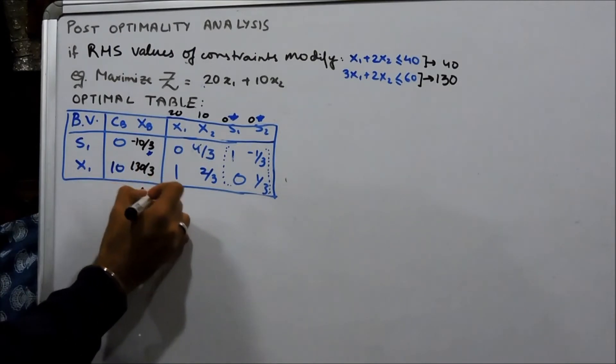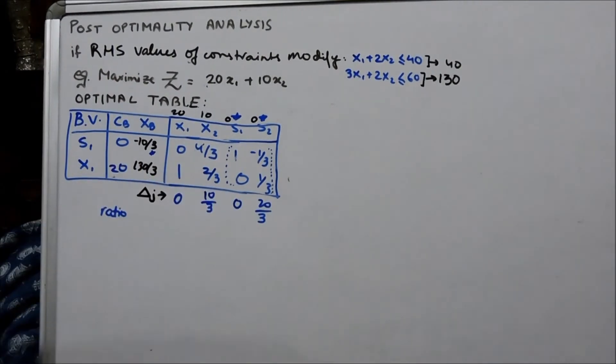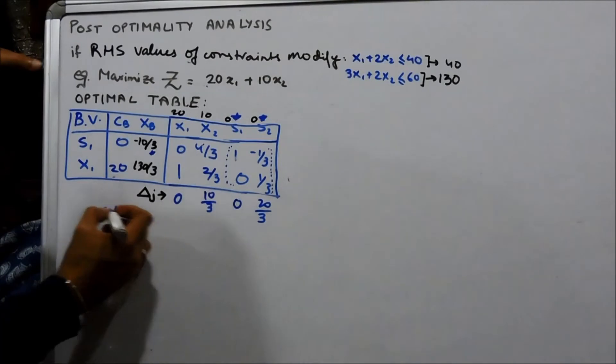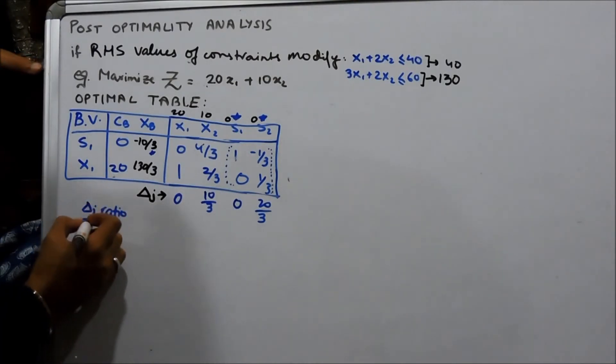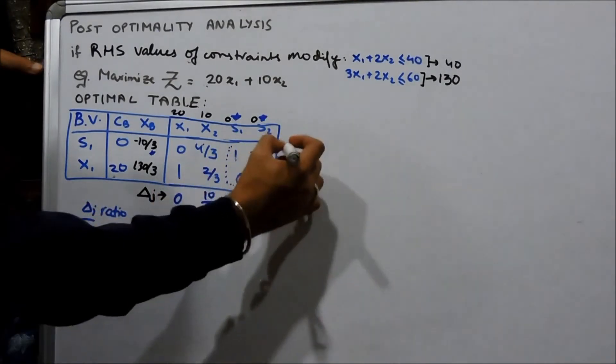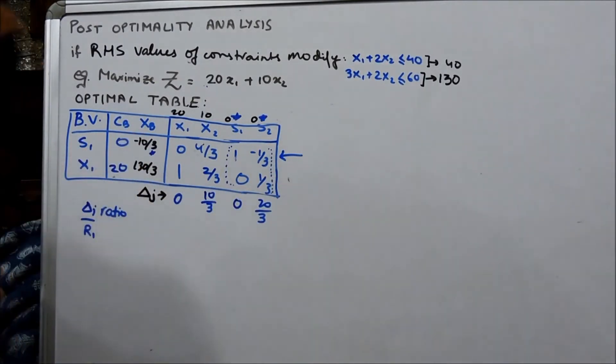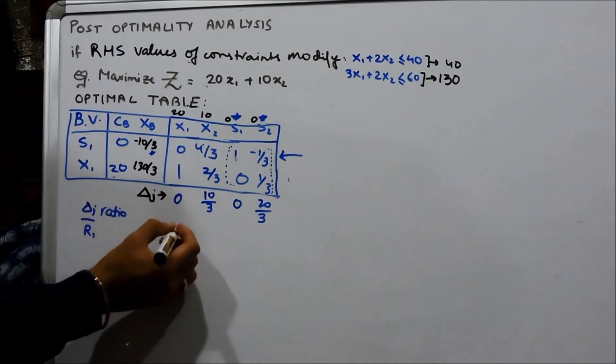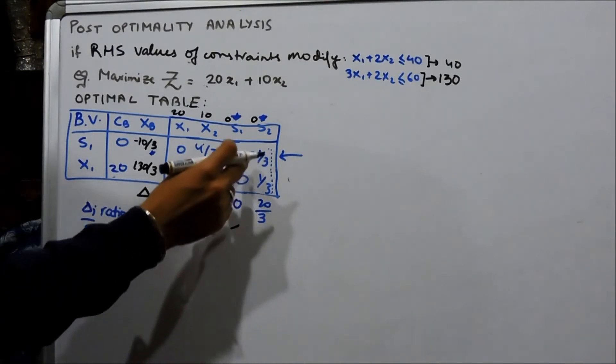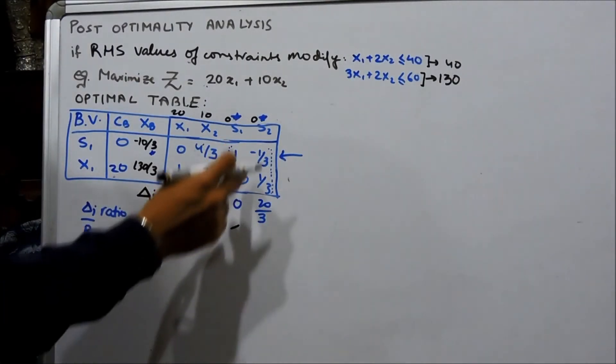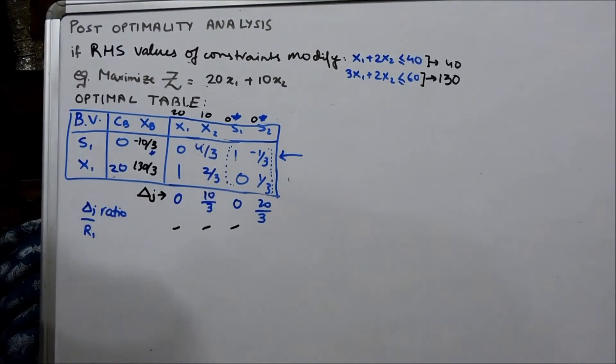We need to calculate the delta J's. The ratio, now we can calculate, delta J by R1, first row because we have the negative XB over here. We get, this is 0, no ratio, no ratio, no ratio, only the negative values in the denominator are taken and the absolute ratios are taken.